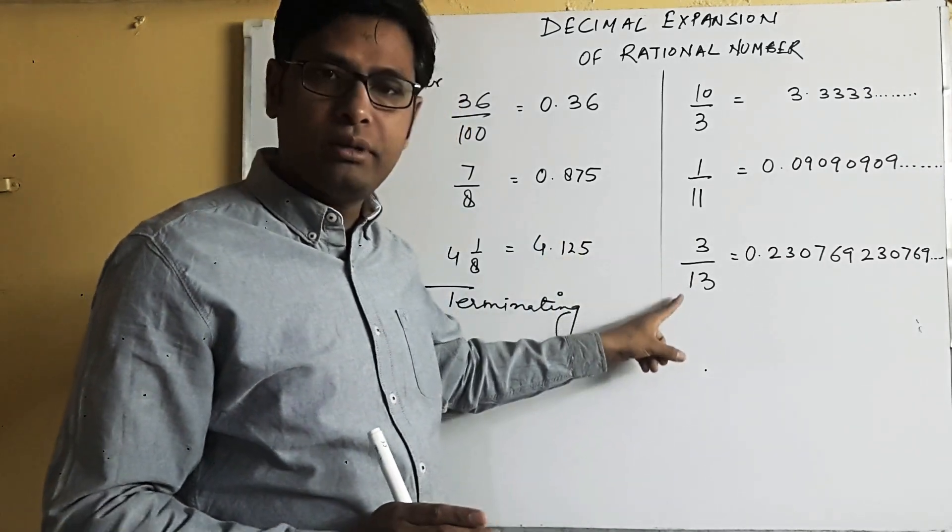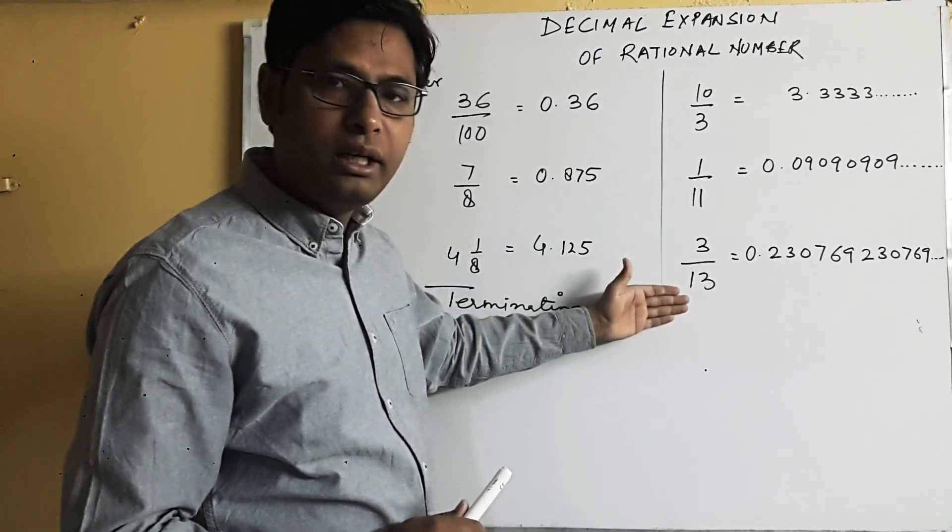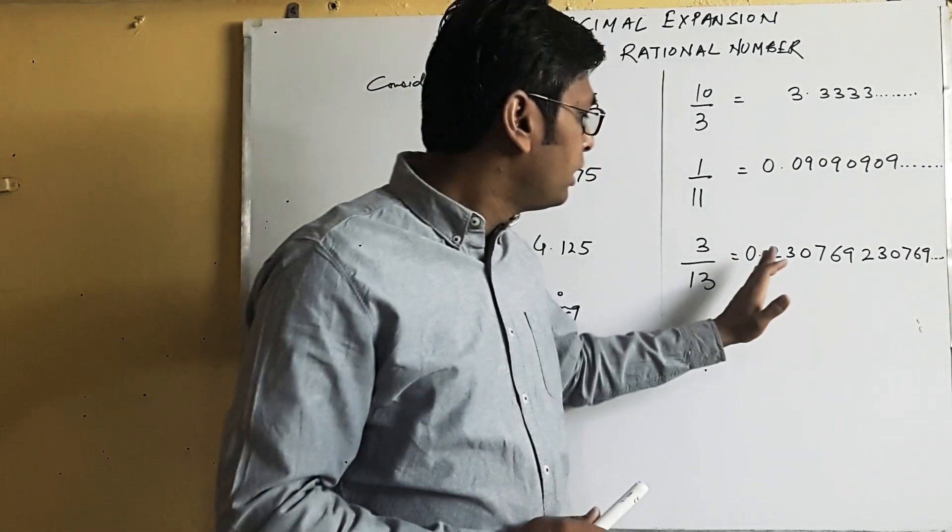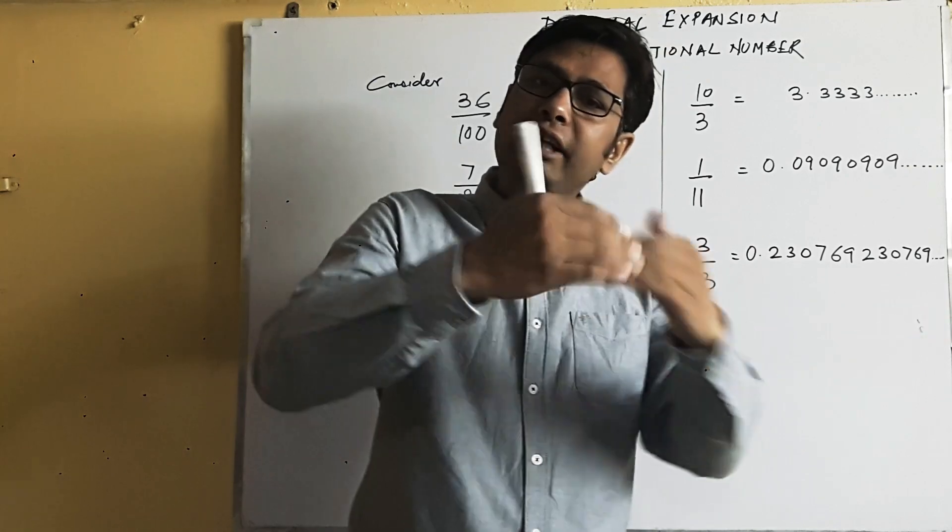One more example in front of you, 3 upon 13. If you divide 3 by 13, you will get 0.230769, and this pattern 230769 repeats and so on.